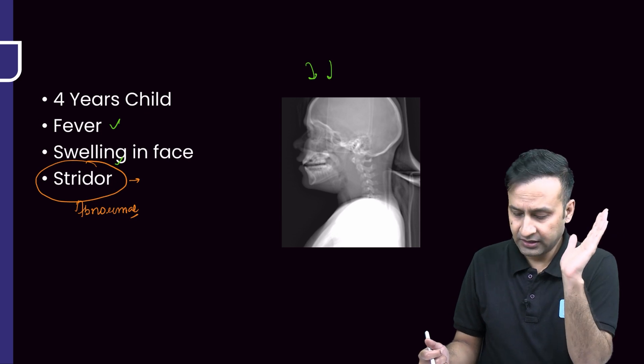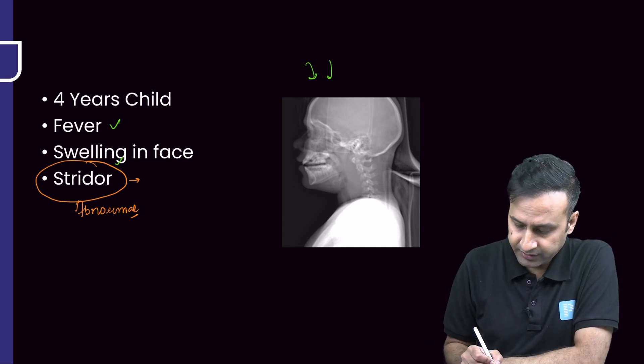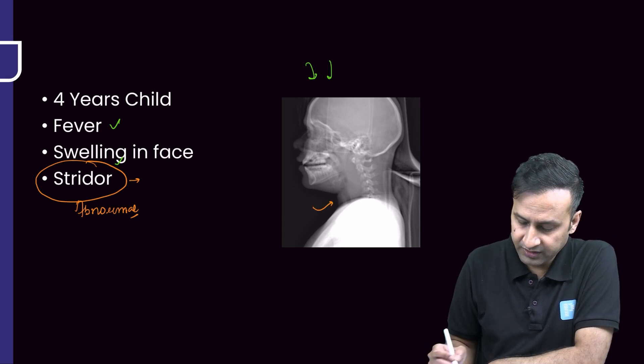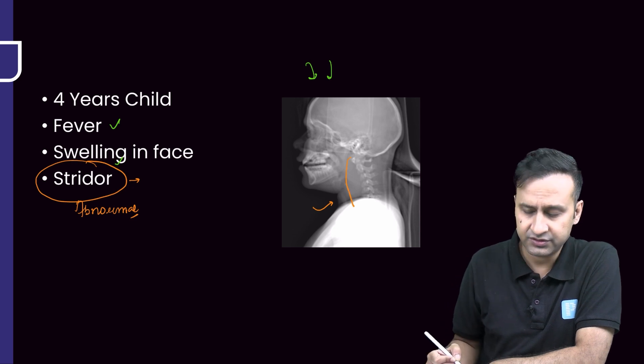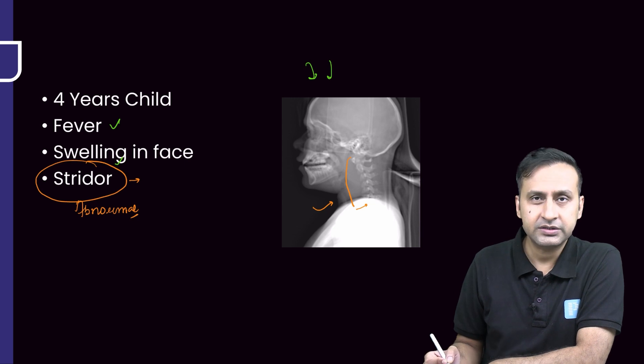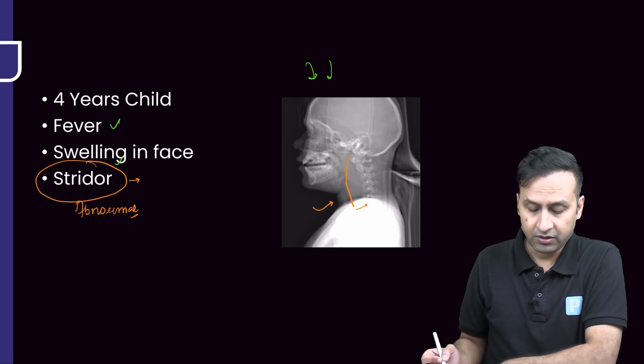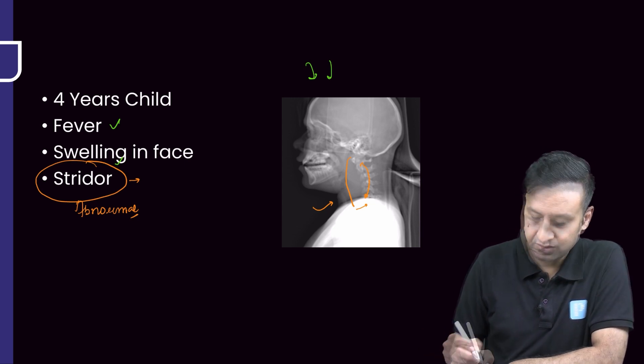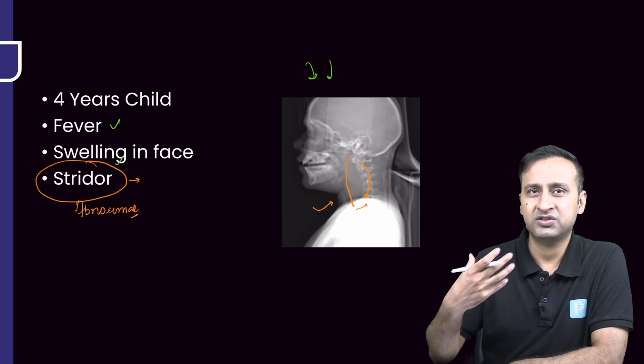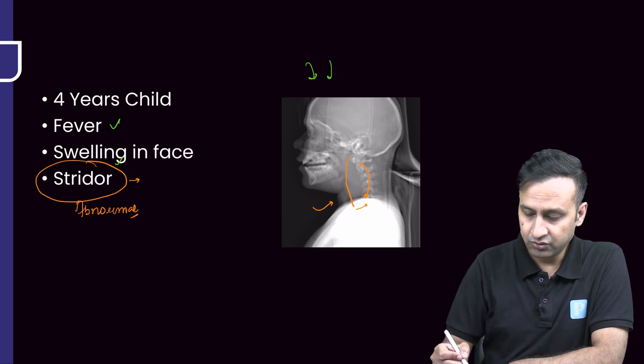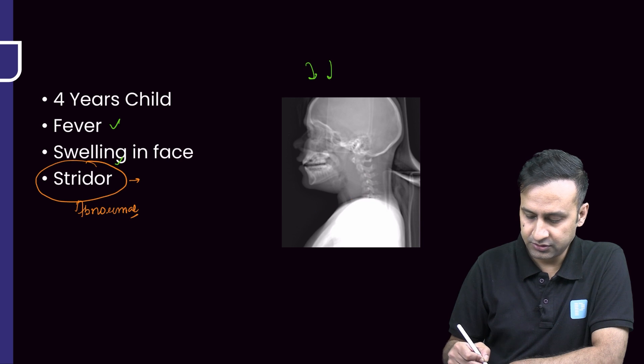Let's look at this particular radiograph. We can see there is increased prevertebral soft tissue thickness extending from C1 level up to the C6 level. You can also see the curvature of the spine is more concave, as if something is pushing the spine posteriorly.